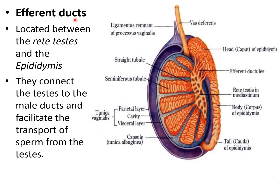About the efferent ducts: they are located between the rete testis and the epididymis. This entire structure is the epididymis, this is the head of the epididymis, and this is the rete testis. These connecting structures are called the efferent ducts — they connect the rete testis with the head of the epididymis.